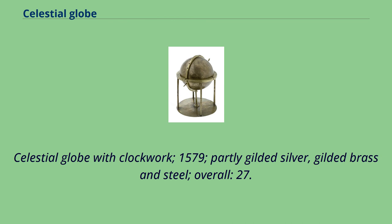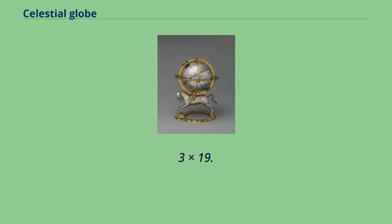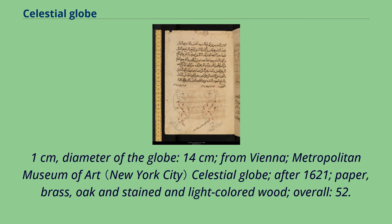Celestial globe with clockwork, 1579. Partly gilded silver, gilded brass and steel. Overall: 27.3 x 20.3 x 19.1 cm. Diameter of the globe: 14 cm. From Vienna.